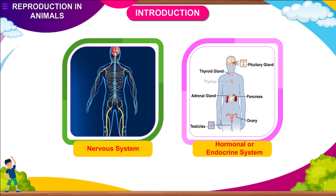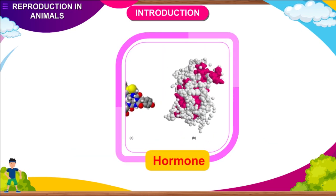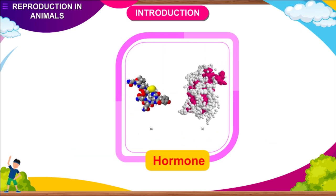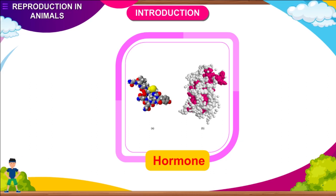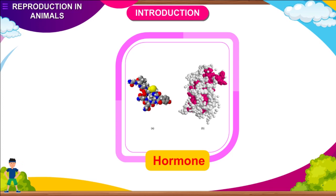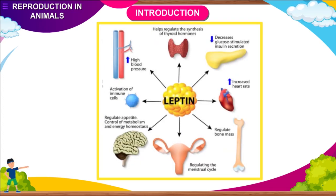Reproduction is a part of the endocrine system. Hence, the hormones are involved. A hormone is a chemical substance that is secreted into the body fluids by one cell or a group of cells that exerts a physiological control affecting other cells of the body.